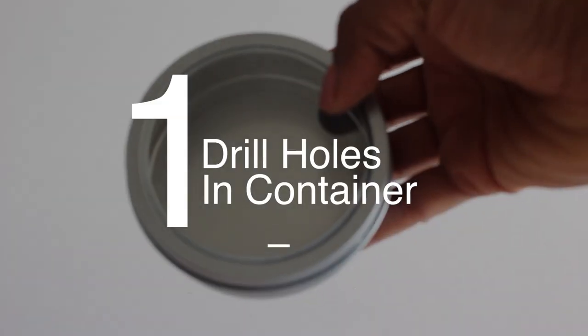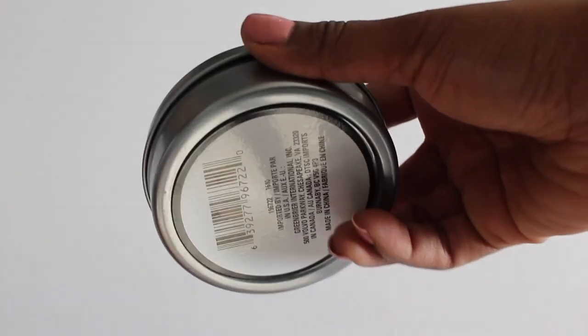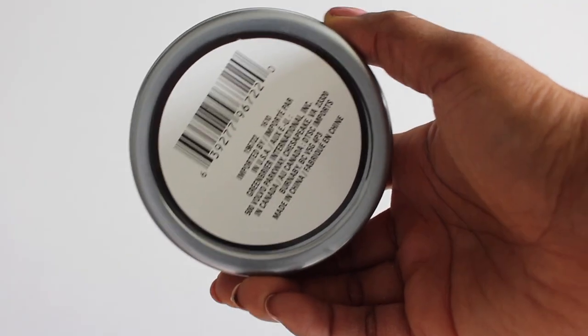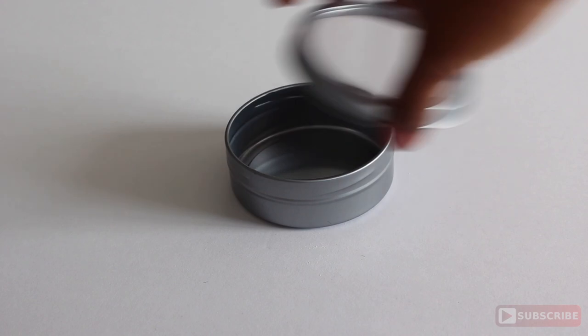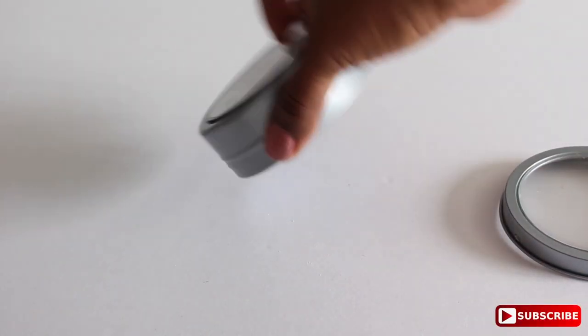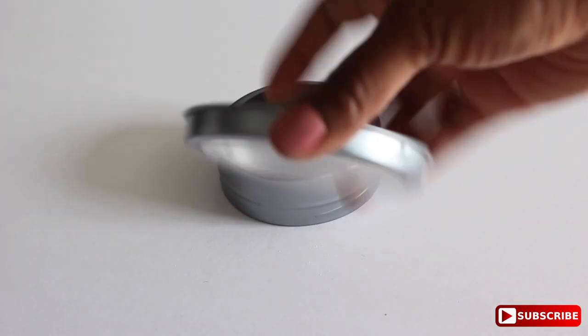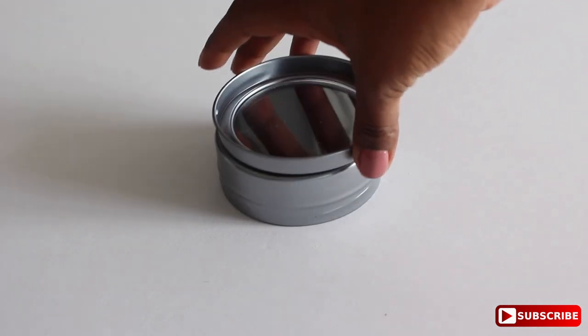So first, we want to drill holes in a container. I found this container in the office supply section of the Dollar Tree. And all we're going to do is just open it up, turn the bottom upside down, remove the label and place the lid upside down just like so.